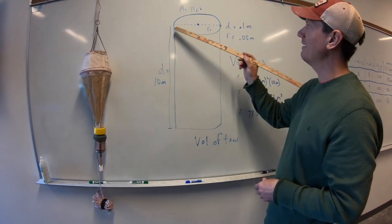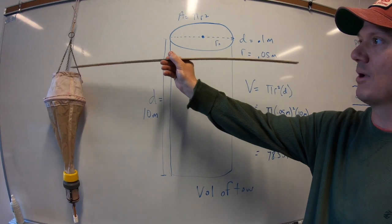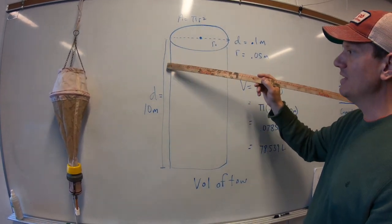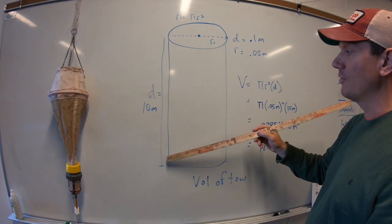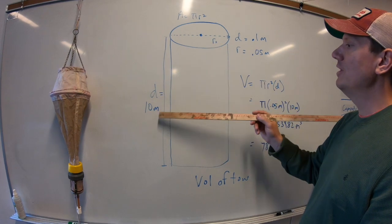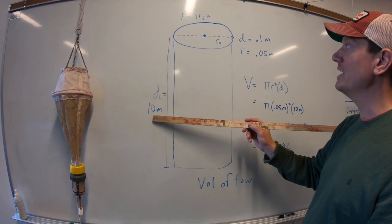Okay, so what we're going to do is we're going to calculate the area of the circle, which represents the aperture of the net. We're going to multiply it by the distance of the tow. In other words, this is how far you threw the plankton net and you pulled it. So that distance was 10 meters.